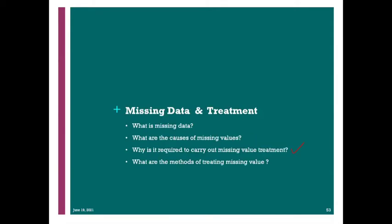What are the methods for treating missing values? The best way is to go back to the source — go back to where you got the data and ask them to fill in the original data. But in most cases we cannot use this method because we don't even know who produced the data, or the people who worked on it have already retired.